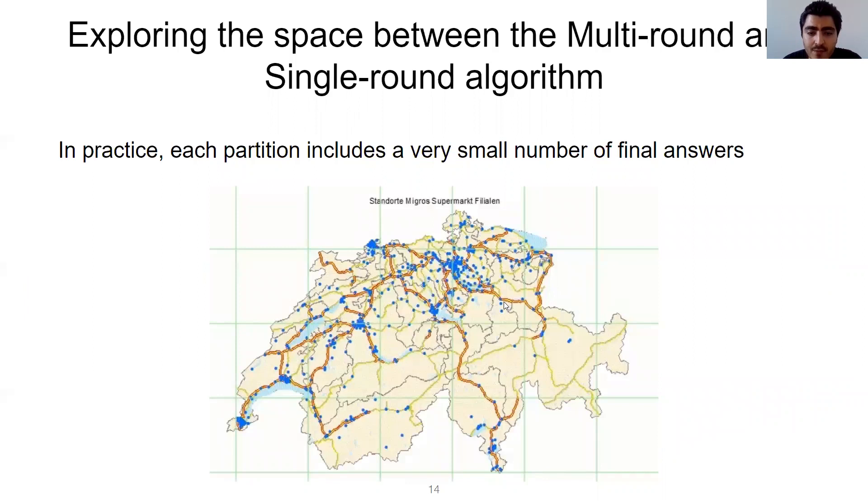Our third algorithm strikes a balance between the number of rounds and the cost of each round. In the interest of time, we will not discuss it in detail. But the key intuition behind this is that each partition contains only a few regions that should be included in the answer. Therefore, the algorithm asks each node to compute very few safe regions, let's say 5 instead of K, thereby drastically reducing the cost of the local execution. In practice, in most cases, the algorithm still requires only one round. You can find the details in the paper.